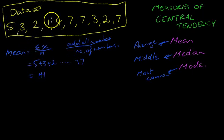and you'll get 41. And there's 10 numbers, so we divide that by 10, and we get a mean of 4.1. So there's our mean or our average.